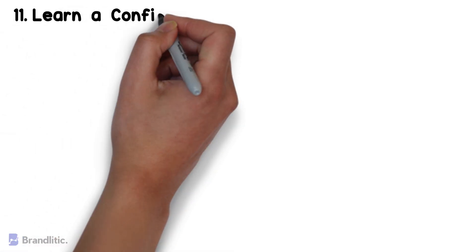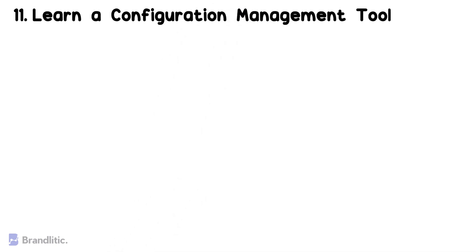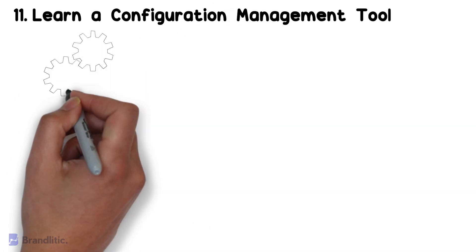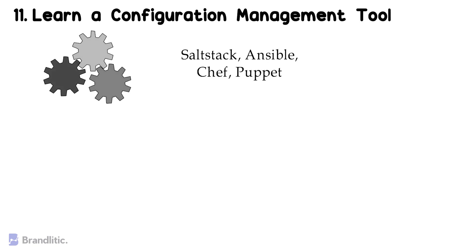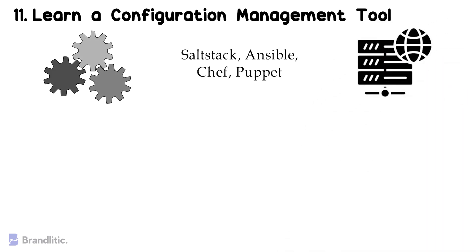Step 11: Learn a Configuration Management Tool. By learning a configuration management tool, you'll be making your life a lot easier, as employing them will simplify complex tasks of environment handling and configuration. There are several tools available, such as SaltStack, Ansible, Chef, Puppet, and so on. You can choose any based on your requirement and begin learning it. Once you learn how to build and deploy applications, you can write a playbook that installs all dependencies and deploys the application on multiple servers.